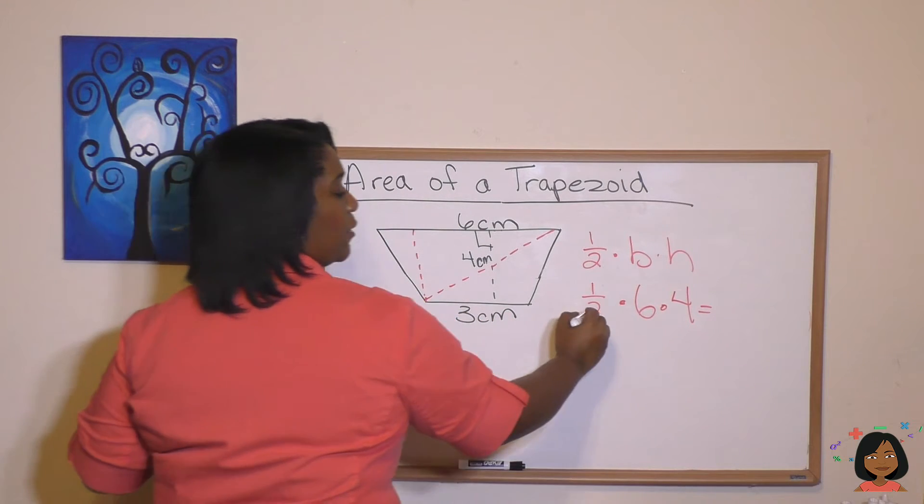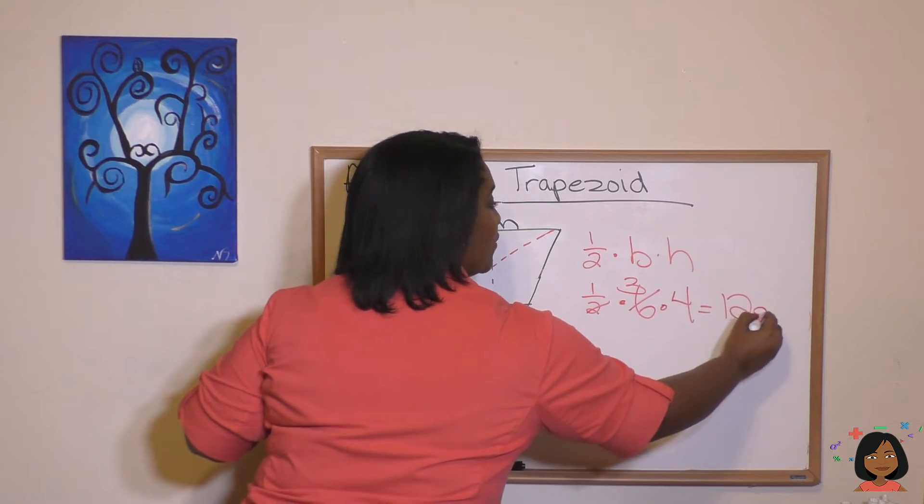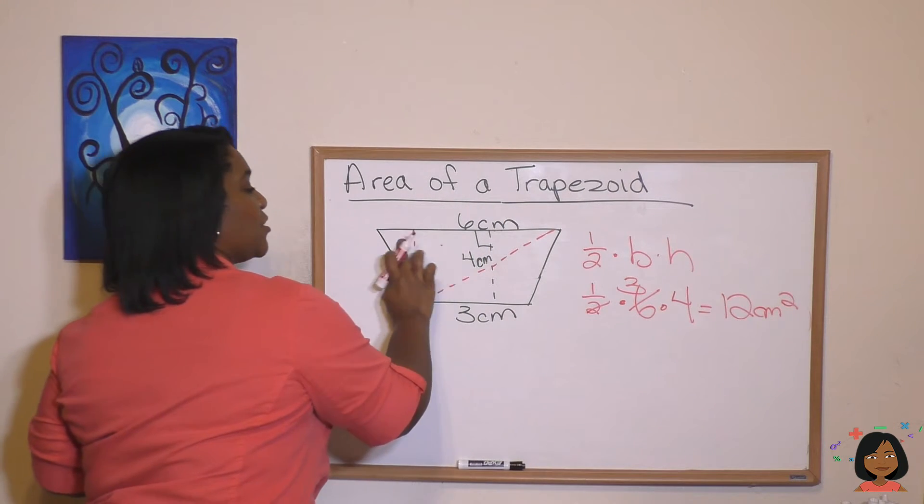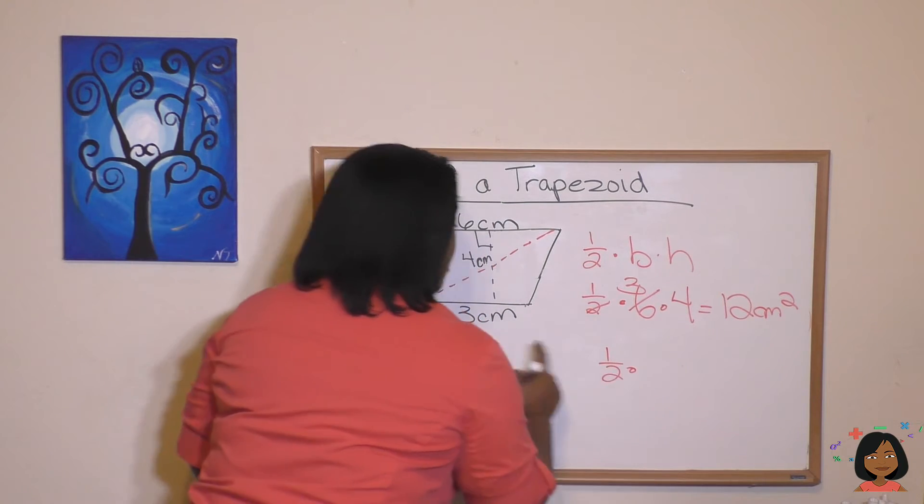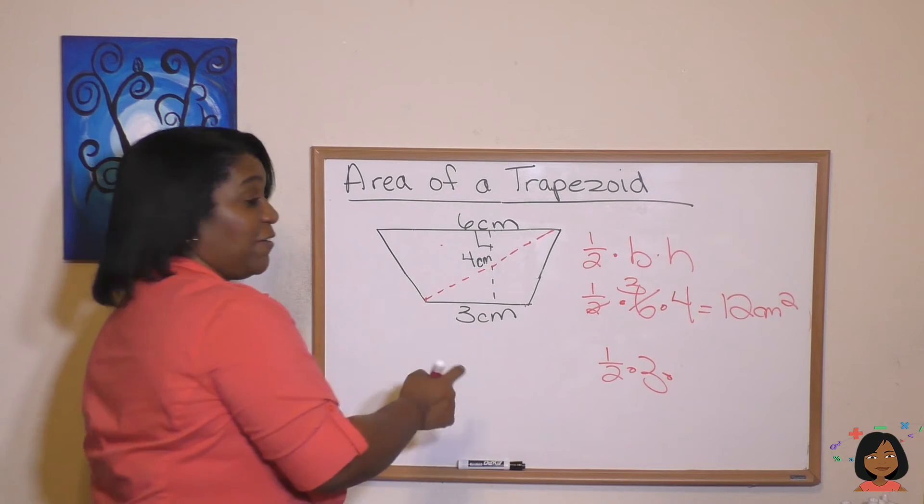And let's just do some canceling here. Two, three. Our answer is going to be 12 centimeters squared for that first triangle. Let's do the second triangle. We have one half. Our base is going to be a three.